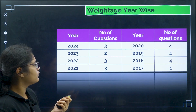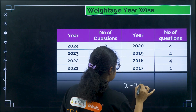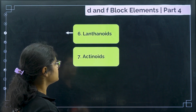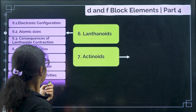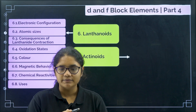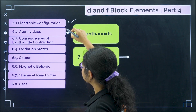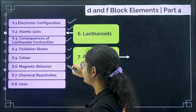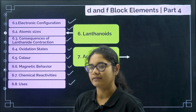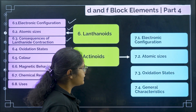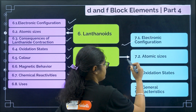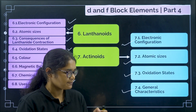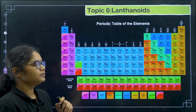You can see the weightage — two to three questions are asked every year from this section. Now for lanthanoids, we are going to cover electronic configuration, atomic sizes, lanthanide contraction, oxidation states, color, magnetic behavior, chemical reactivities, and uses. And for actinoids, we will cover electronic configuration, atomic sizes, oxidation states, and some general characteristics.